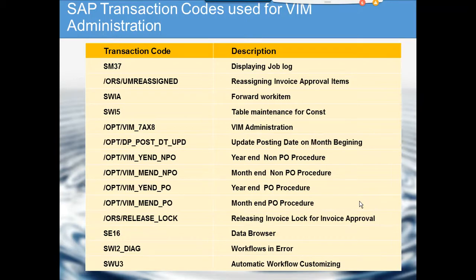SWIA can be used to forward non-approval work items — that's the key distinction. With SWIA you can also check the SAP inbox of a person so that you know the work item ID and can then reassign it.